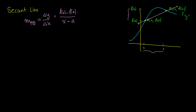Now what is a tangent line? This is what we really want to know and it's huge in calculus — very, very important. A tangent line is when we take Q and move it closer and closer to P until it's pretty much directly on P. Then we take the secant line between those two points, which becomes a tangent line — a straight line that just touches the curve right at that point.